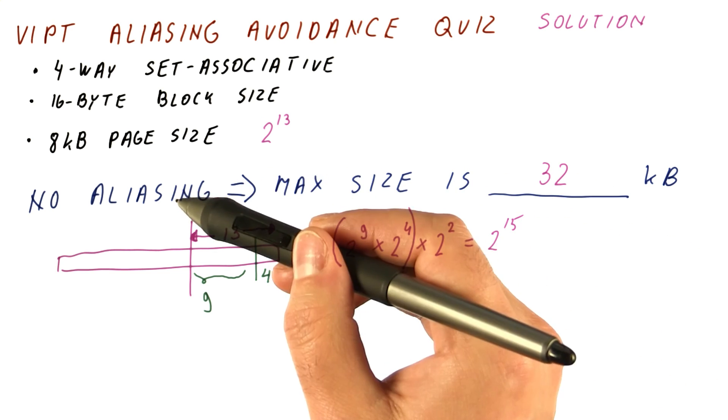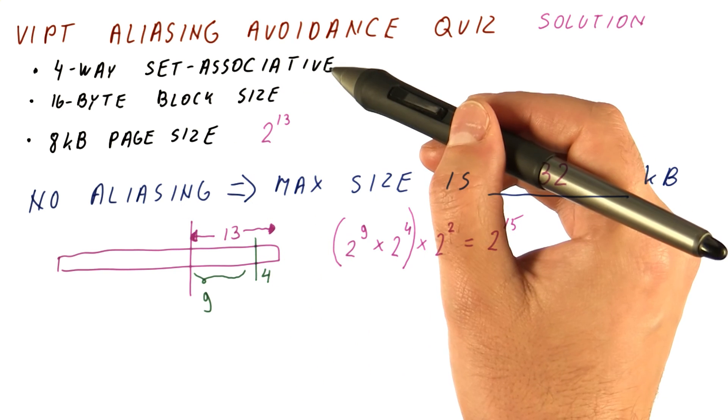And the only way to avoid aliasing in a cache, while making it larger, is to increase associativity.